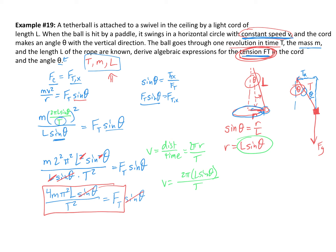Don't worry — finding the angle isn't too bad because now we actually know the force of tension. In our free body diagram, the force of tension is that whole expression. We also know the vertical component of tension, because the vertical part must balance gravity, which is simply mg. So just connect the adjacent side with the hypotenuse: cosine of theta equals the adjacent over the hypotenuse.